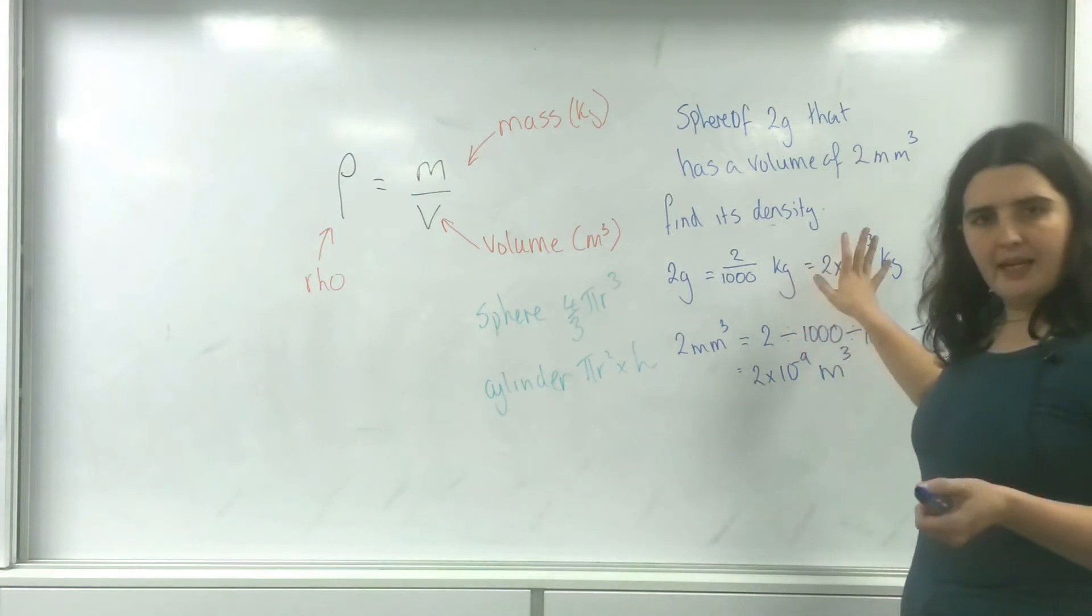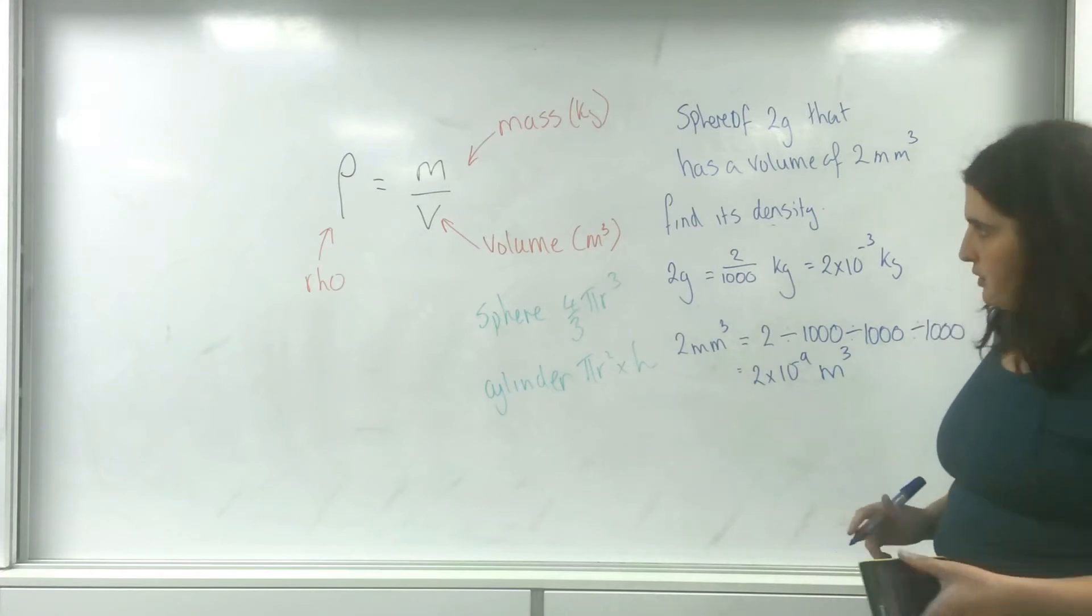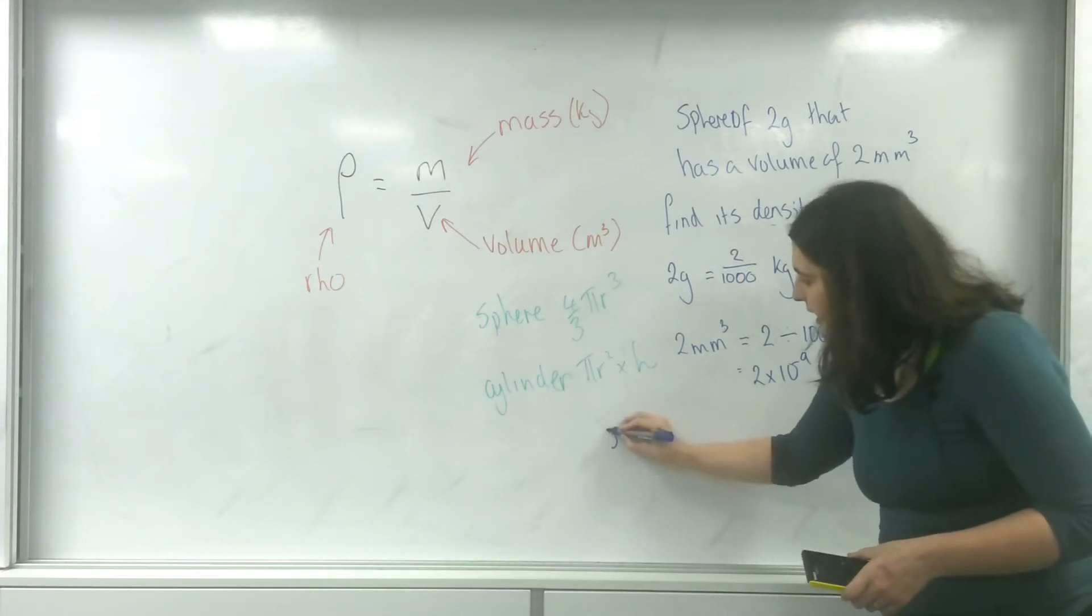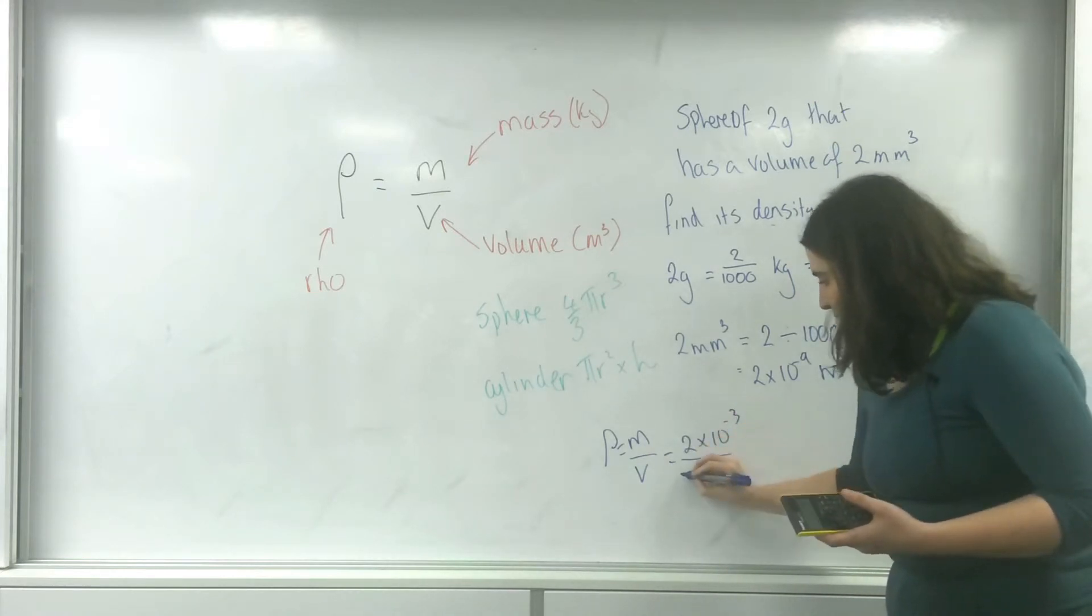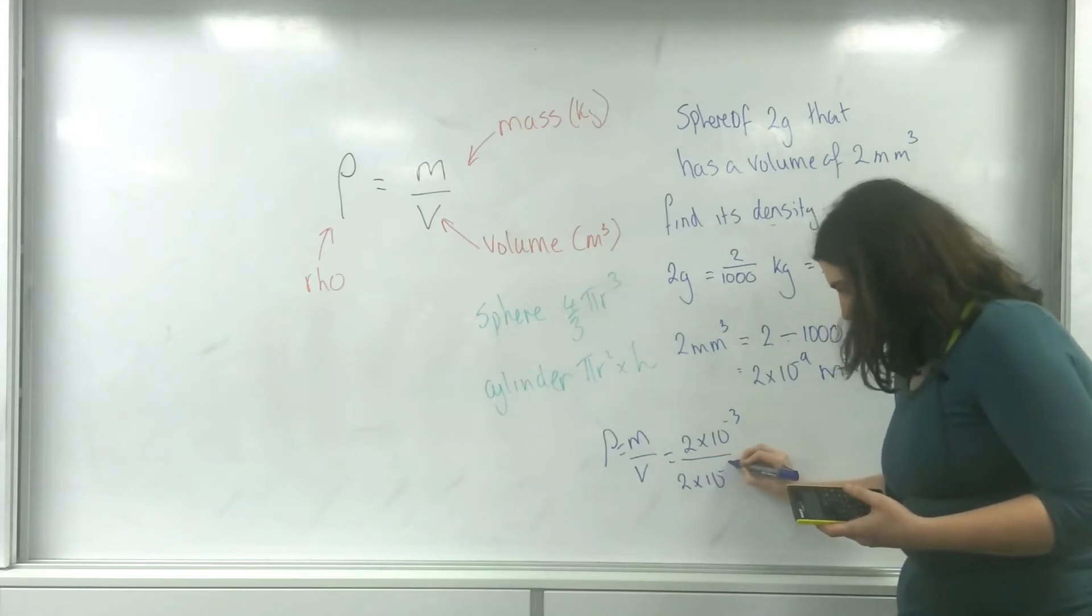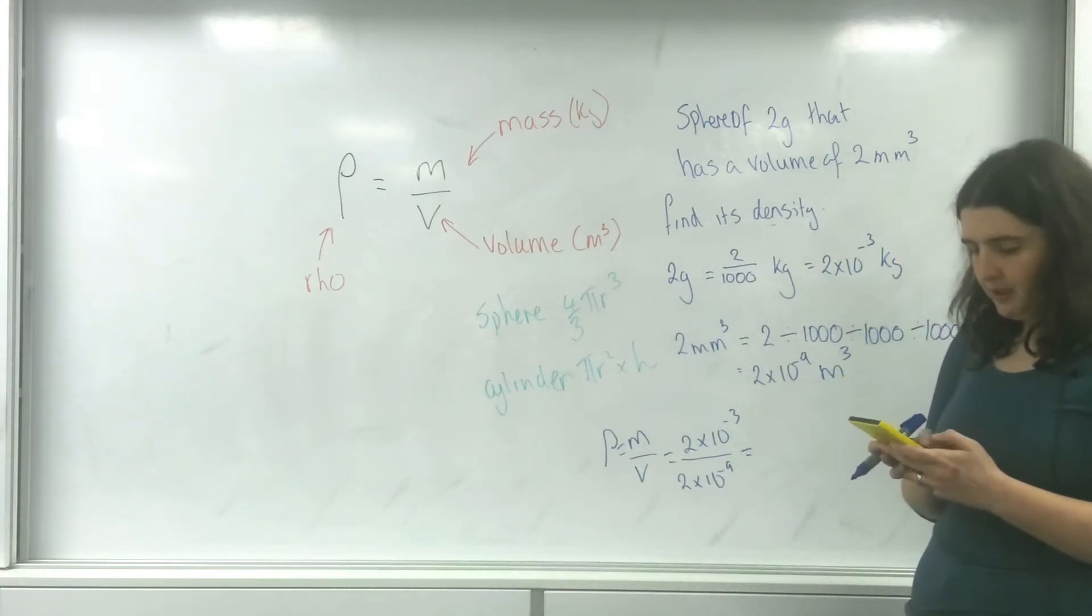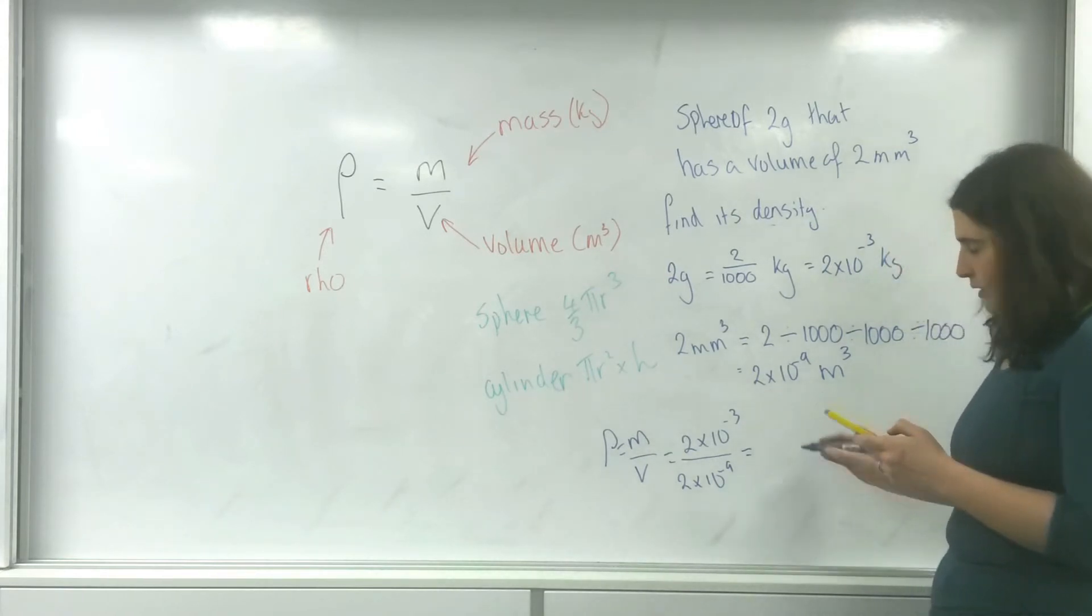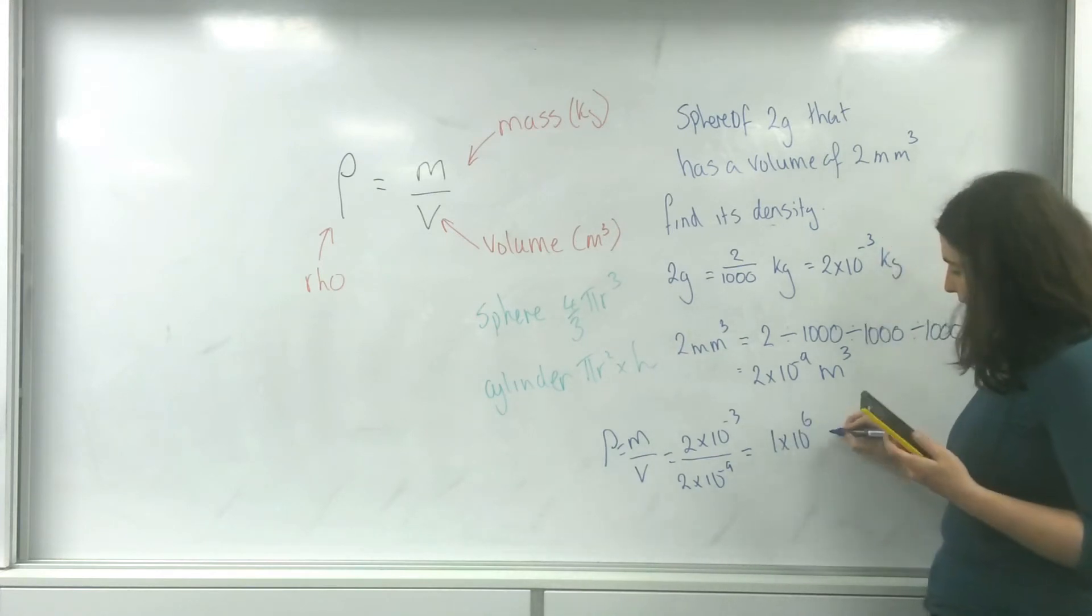So I have everything in kilograms and meters cubed. Let's put this into the formula. Density is mass over volume. It's 2 times 10 to the minus 3 over 2 times 10 to the minus 9. That equals 1 times 10 to the 6, and the units for density are kilograms per meter cubed.